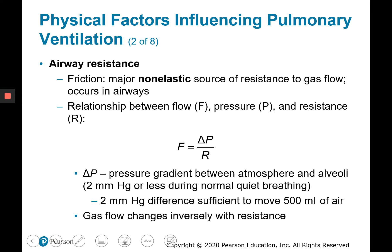First we'll look at airway resistance. Friction is going to be our major contributor to airway resistance, especially the major non-elastic source — it's going to impede gas flow. By this equation, which includes flow of air equal to change in pressure over resistance, flow and resistance are inversely related. So gas flow changes inversely with resistance; if some impediment is introduced, that's going to decrease gas flow.